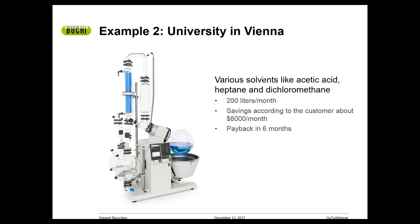Example number two is another university in Vienna. They're processing solvents including acetic acid, heptane, and dichloromethane — about 200 liters a month. When you're working with solvents that cost more than acetone and ethanol, the savings can be even greater. You're talking about paying back your instrument in six months as opposed to a year and a half. These examples really do put things in perspective.